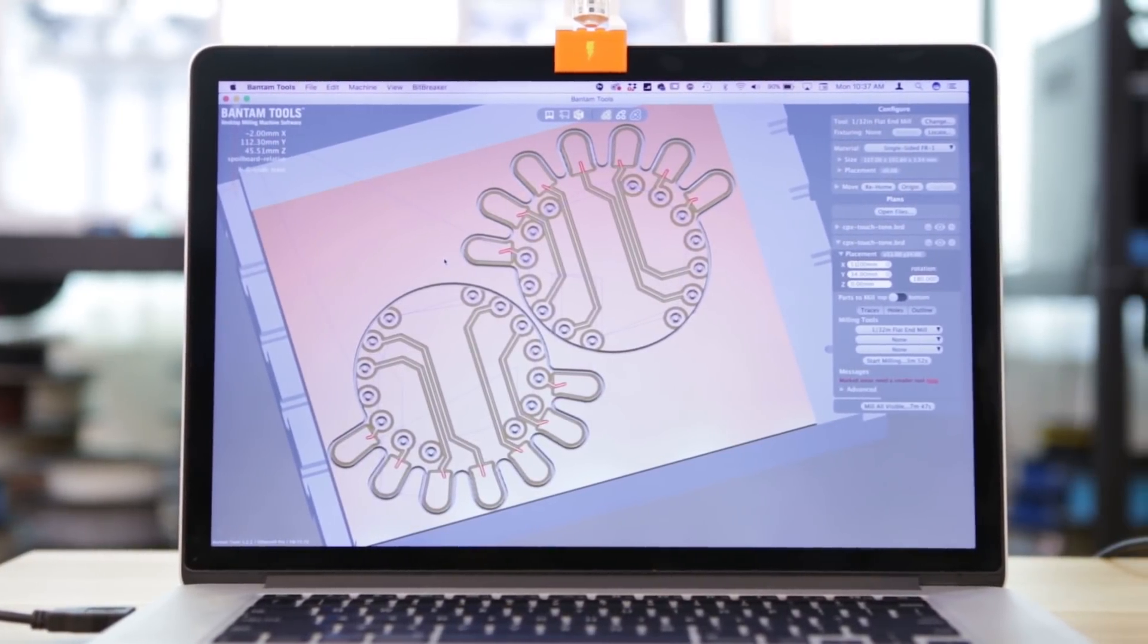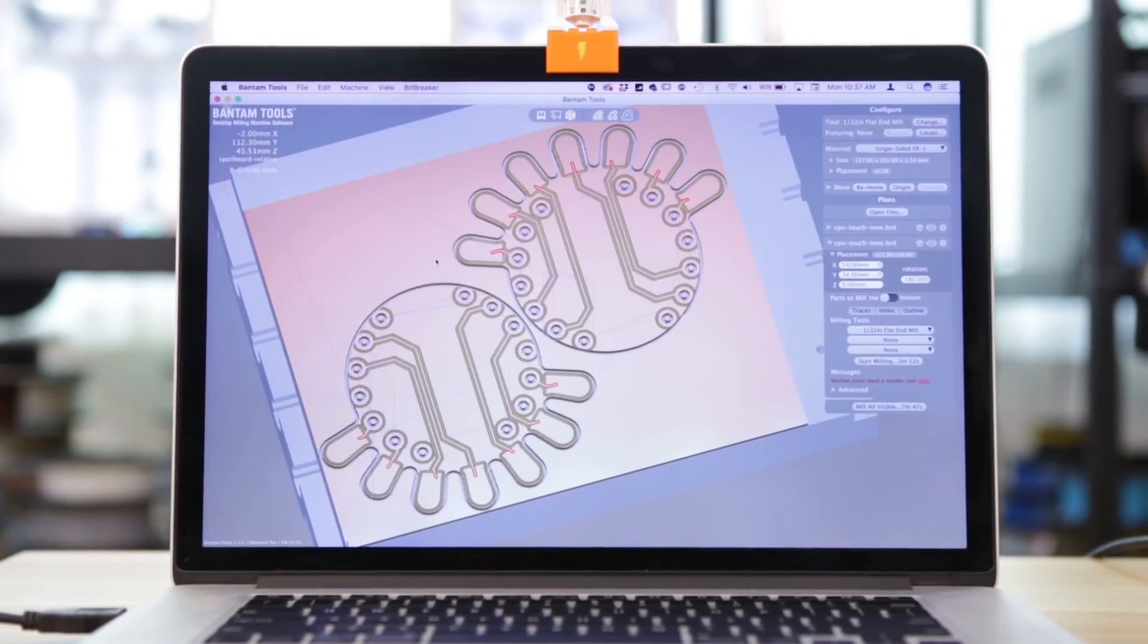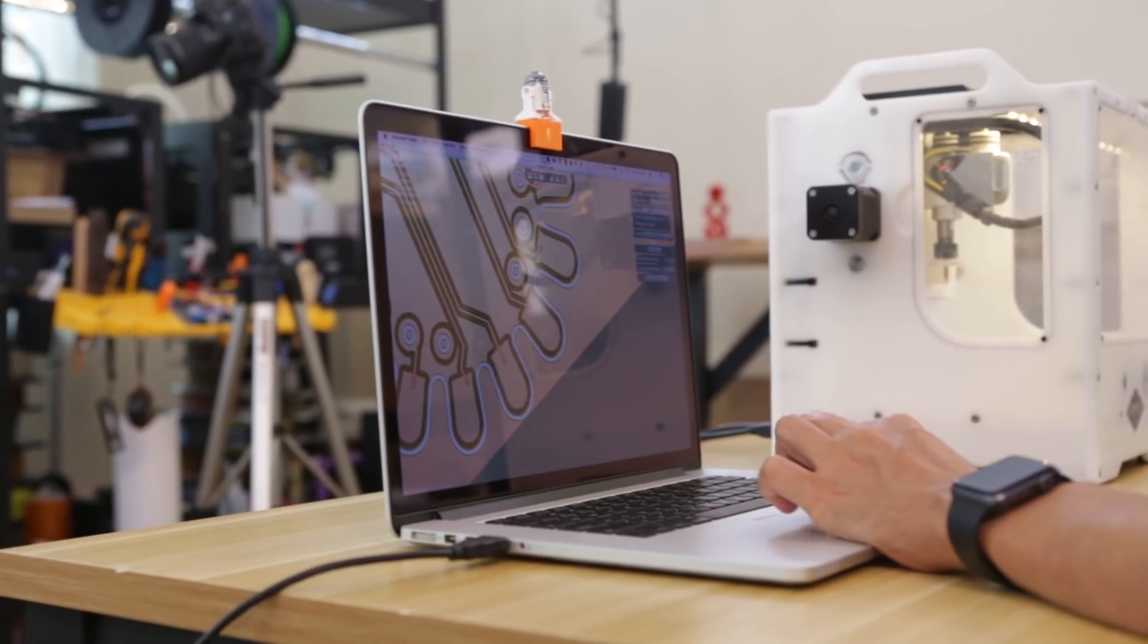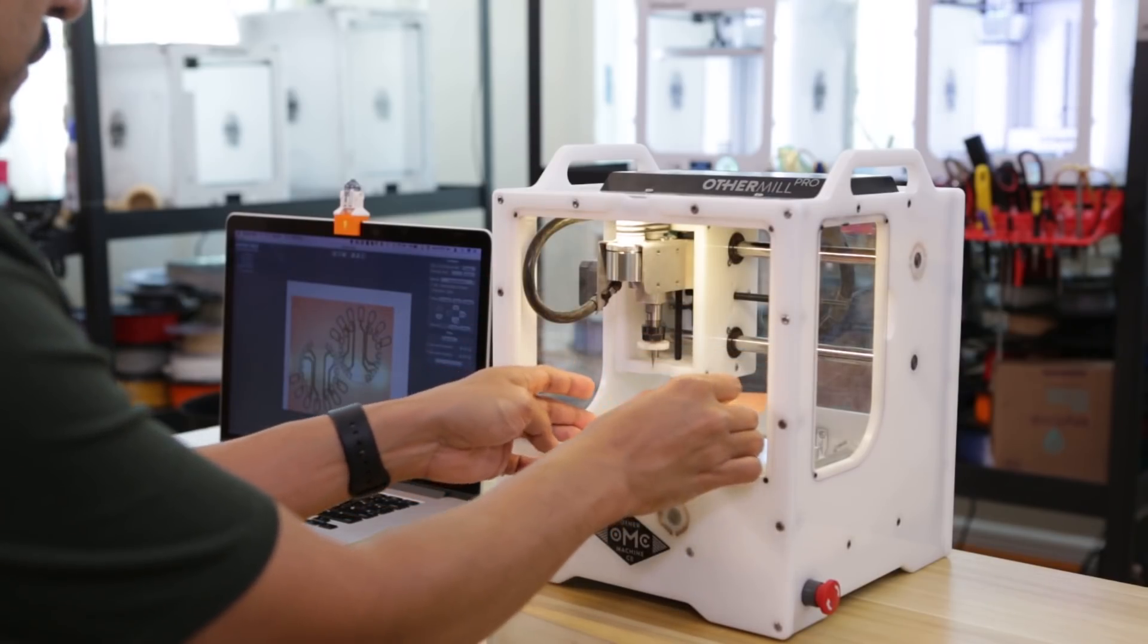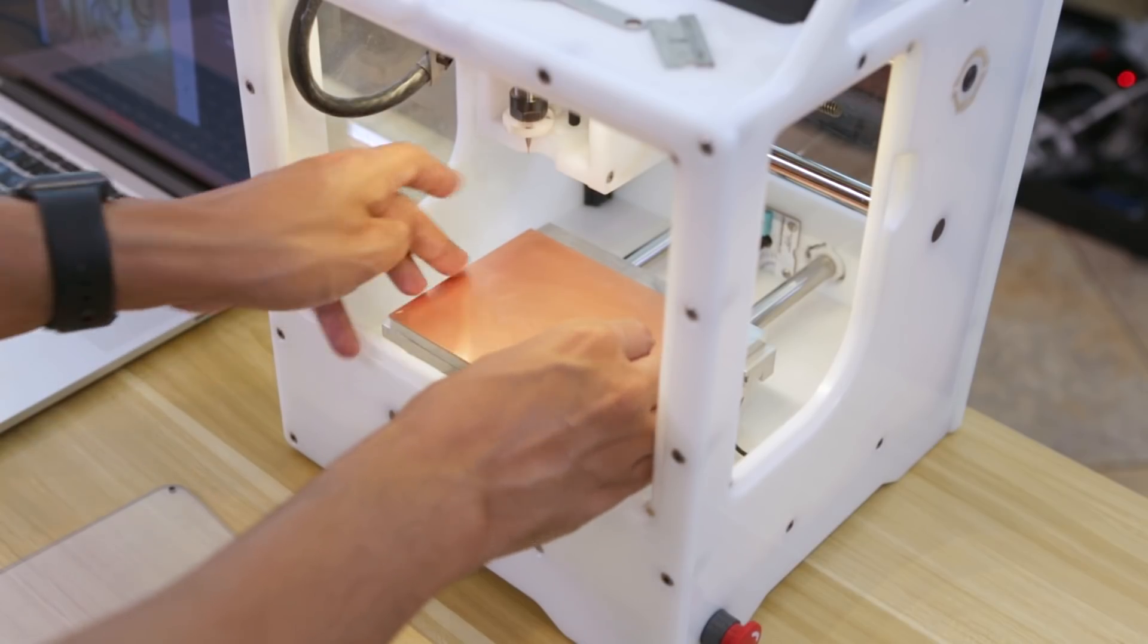We designed a PCB for the Circuit Playground Express and milled it on a desktop CNC. This add-on has large touchpads and expands the pins for capacitive touch. We used a single sided FR1 PCB because it's great for these simple types of projects.